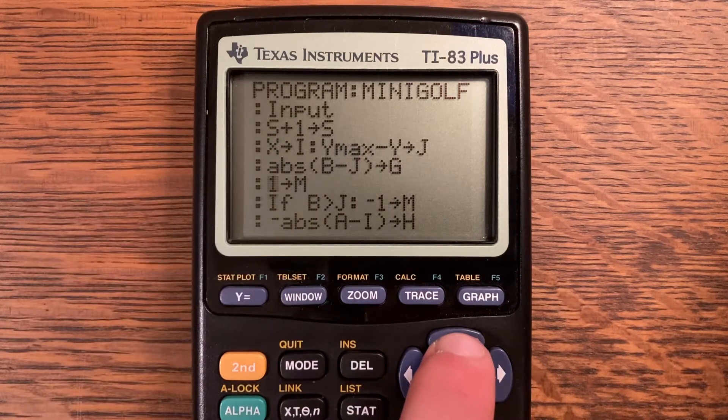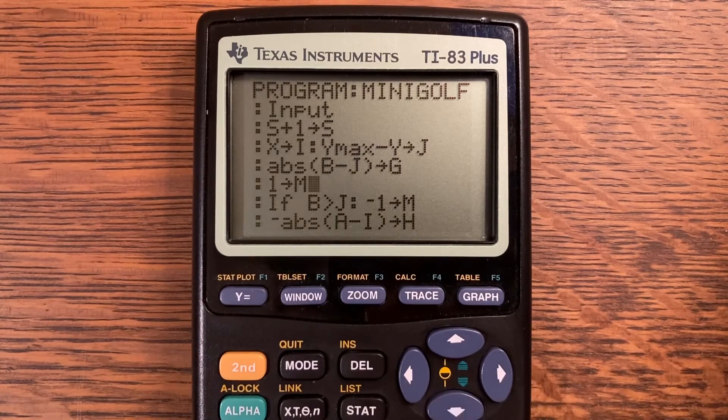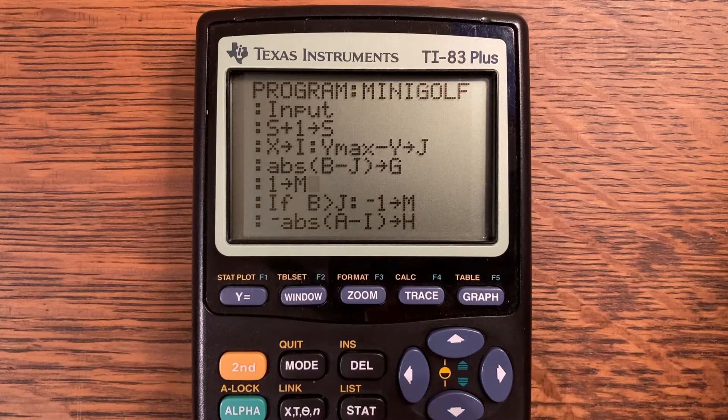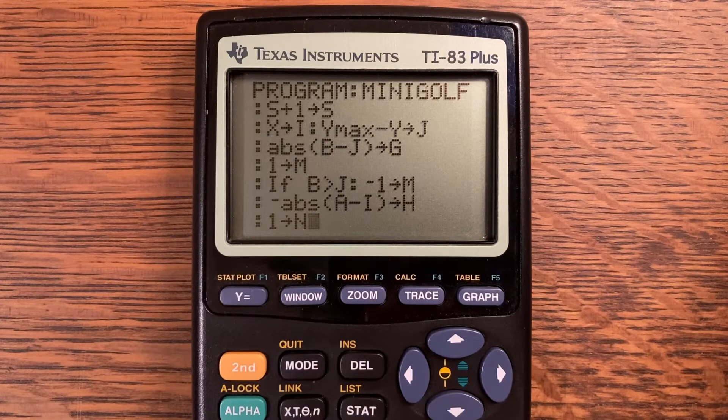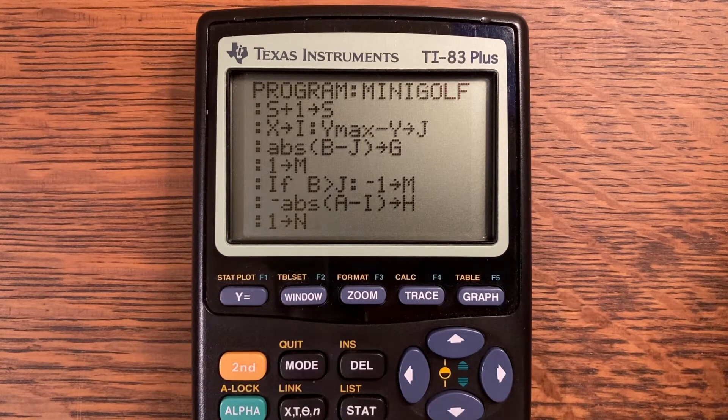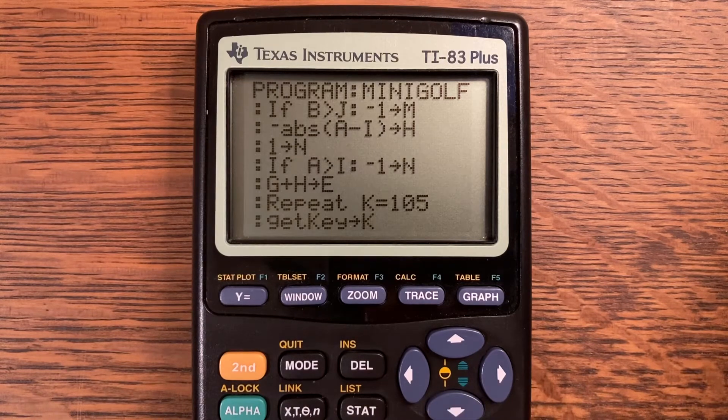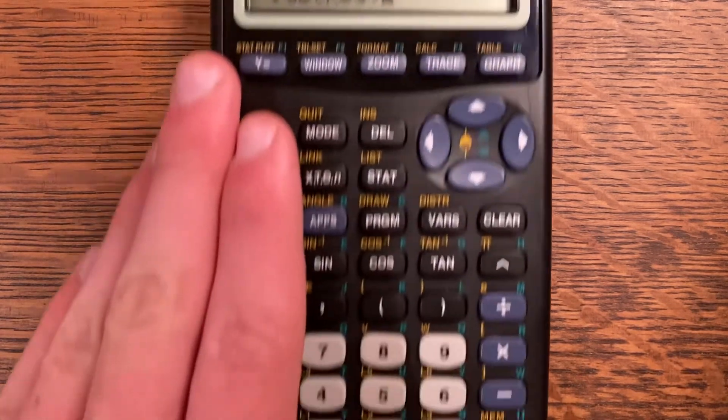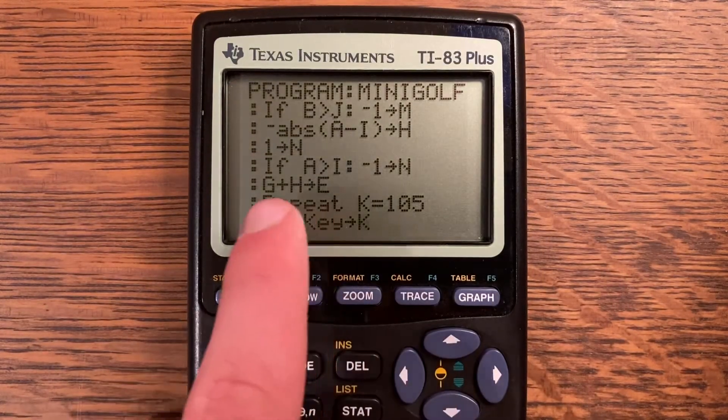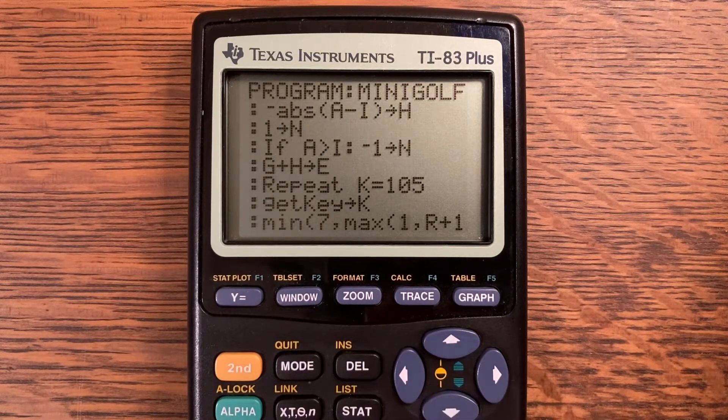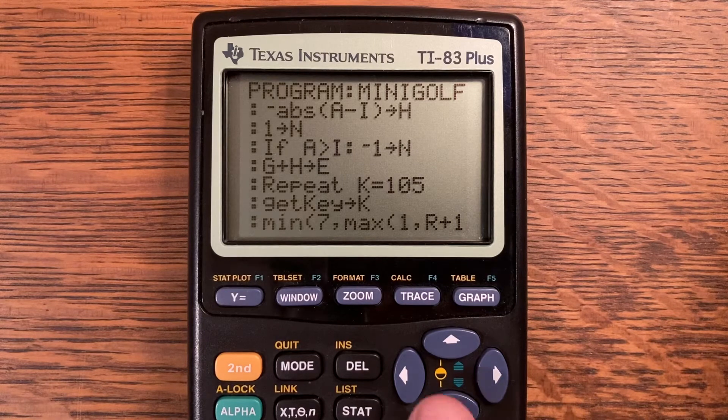X store into I and then a colon. Y-max minus Y store into J. Absolute value of B minus J store into G. 1 store into M. If B is greater than J, negative 1 store into M. Negative absolute value of A minus I store into H and 1 store into N. If A is greater than I, negative 1 store into N. Make sure you use the actual little negative sign here, not a minus sign.